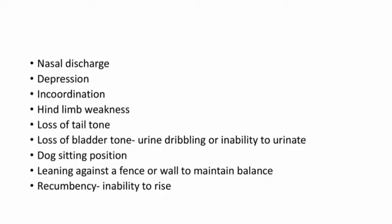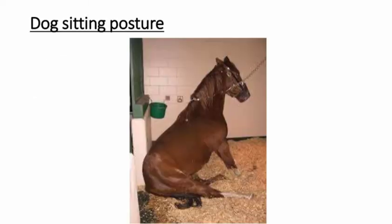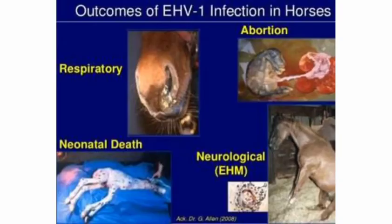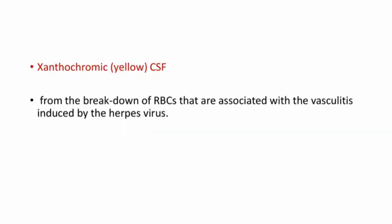Here you can see the peculiar dog-sitting posture in horses. Outcomes of equine herpesvirus infection in horses include equine herpesvirus myeloencephalopathy — the neurological condition we are discussing — as well as abortion, respiratory signs, and neonatal death. There will be xanthochromic or yellow CSF from the breakdown of RBCs associated with the vasculitis induced by the herpesvirus.